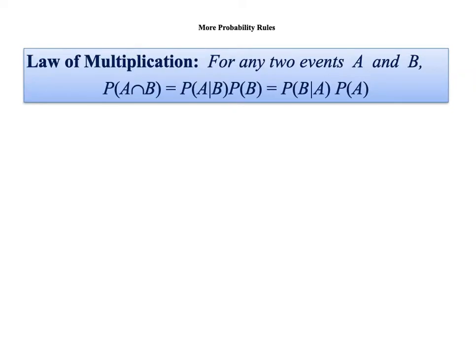We have what we call the multiplication law, or multiplication rule. For any two events A and B, we are looking for the probability that both event A and B are going to occur — indicated by the intersection of the two events. By the multiplication rule, the probability of A intersection B equals the probability of A given B already occurred, multiplied by the probability of B. Equivalently, it equals the probability of A multiplied by the probability of B given A already happened.